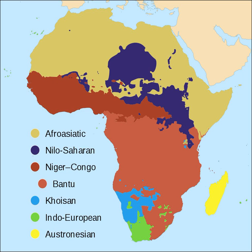Due partly to its multilingualism and its colonial past, a substantial proportion of the world's Creole languages are to be found in Africa. Some are based on Indo-European languages — e.g., Krio from English in Sierra Leone and the very similar pidgin in Nigeria, Ghana and parts of Cameroon; Cape Verdean Creole in Cape Verde and Guinea-Bissau Creole in Guinea-Bissau and Senegal, both from Portuguese; Seychellois Creole in the Seychelles and Mauritian Creole in Mauritius, both from French.